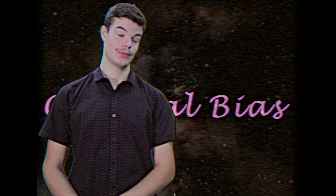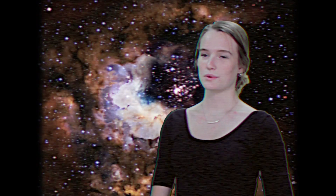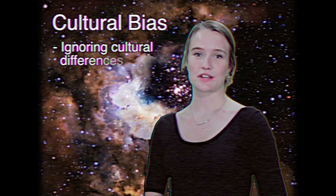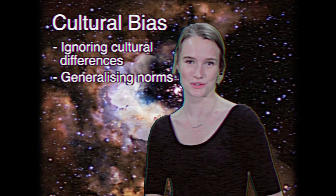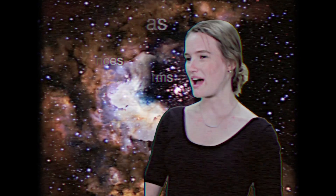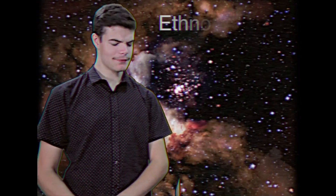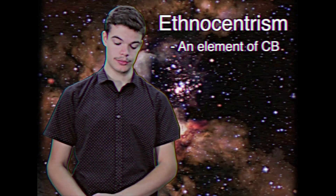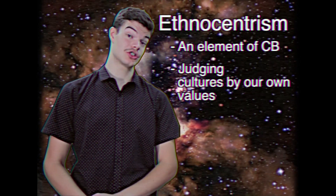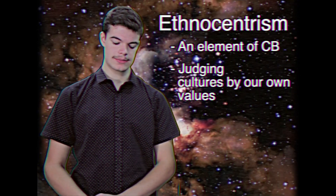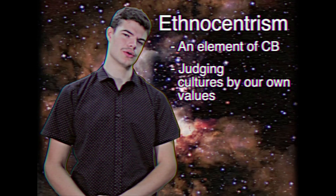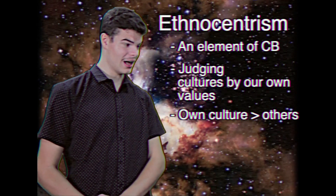To conclude our lesson we're going to summarize the most important elements of cultural bias. Firstly, what is bias? Well, cultural bias is the concept of ignoring cultural differences and considering norms to be the same in various cultures across the world. But what about ethnocentrism then? Well, ethnocentrism is an element of cultural bias which suggests that we judge other cultures by the values of our own. Sometimes these concepts evolve as a result of believing that one's own culture is superior to others.